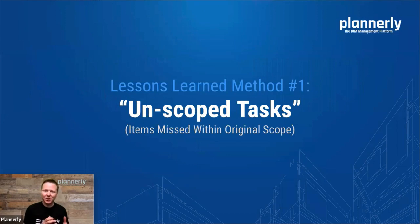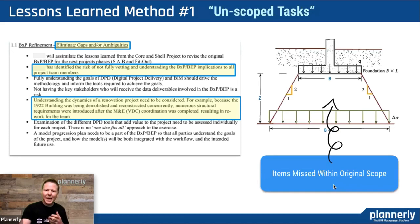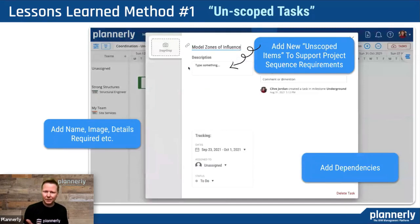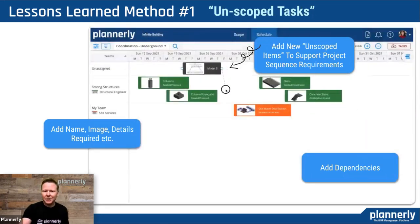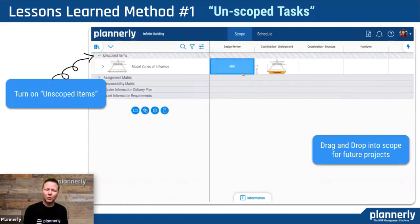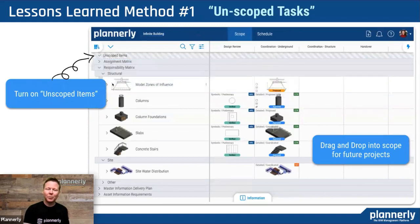Method number one: when you create a scope and you think you've thought of everything, but actually you missed some things in the original scope that came up later on in the project. These gaps or ambiguity are a real opportunity to learn for the next project. For example, the underground services team says, 'I need the zone of influence under the foundations in order to coordinate my underground services.' In capturing that data, the underground services team adds this 'model zones of influence' item, simply drags a photograph in, adds the details required, and adds any dependencies between that task and their task. The team is able to turn on this set of unscoped items and then see — maybe in a future project, we should think about this item. By dragging and dropping it into a project, we can use it as a template for future projects. So it closes out that loop.